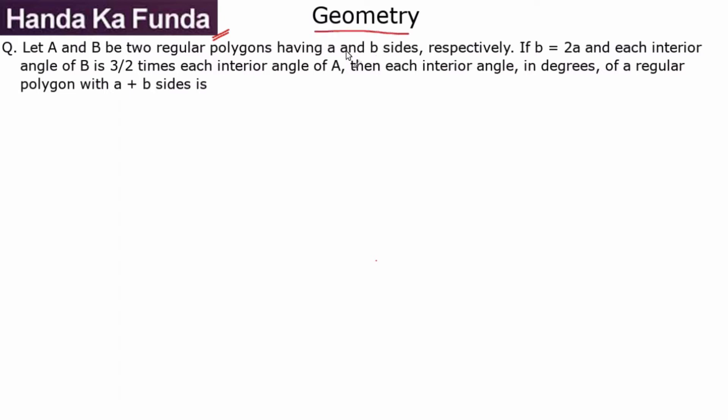In this video, we deal with angles in a polygon. We are given, let A and B be two regular polygons having A and B sides. If B is equal to 2A and each interior angle of B is 3/2 times each interior angle of A.